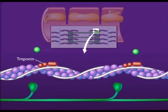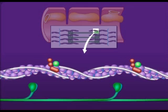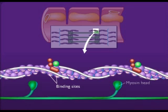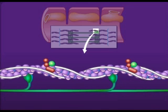When calcium ions bind to troponin, this causes troponin to change conformation and move the tropomyosin. When the tropomyosin moves, this uncovers the myosin-binding sites on the actin, allowing myosin heads to bind and form crossbridges. The crossbridges play a role in muscle contraction.